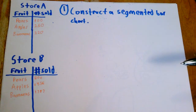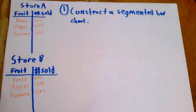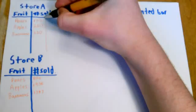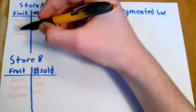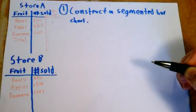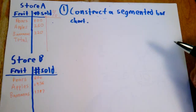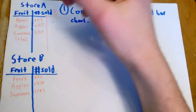To do that, we first need to get these frequencies here into relative frequencies. So I'm going to make a third column here labeled percent. And now let's find the total for this first store by adding up those numbers. 100 plus 250 plus 320 is 670.